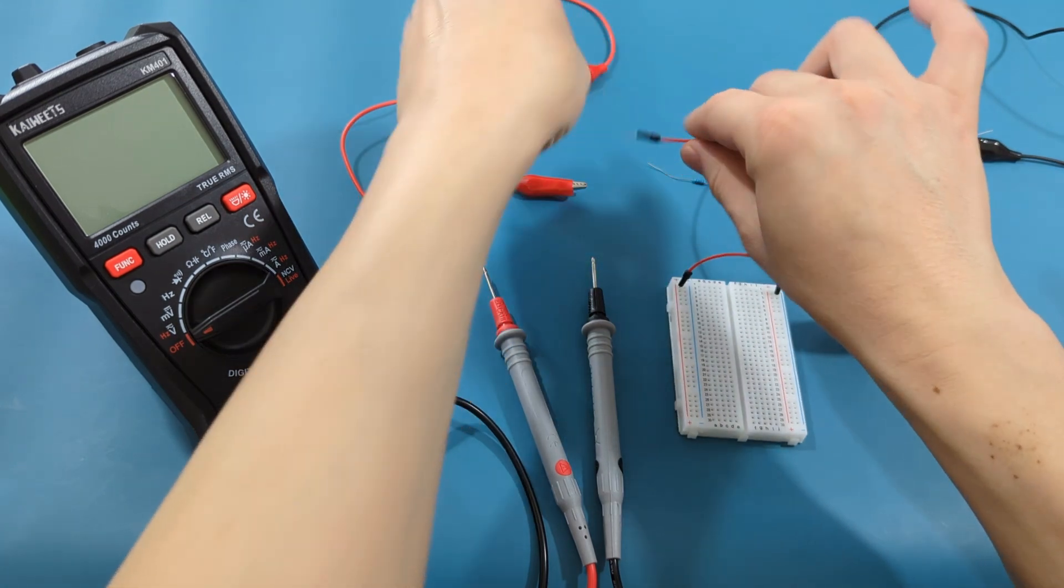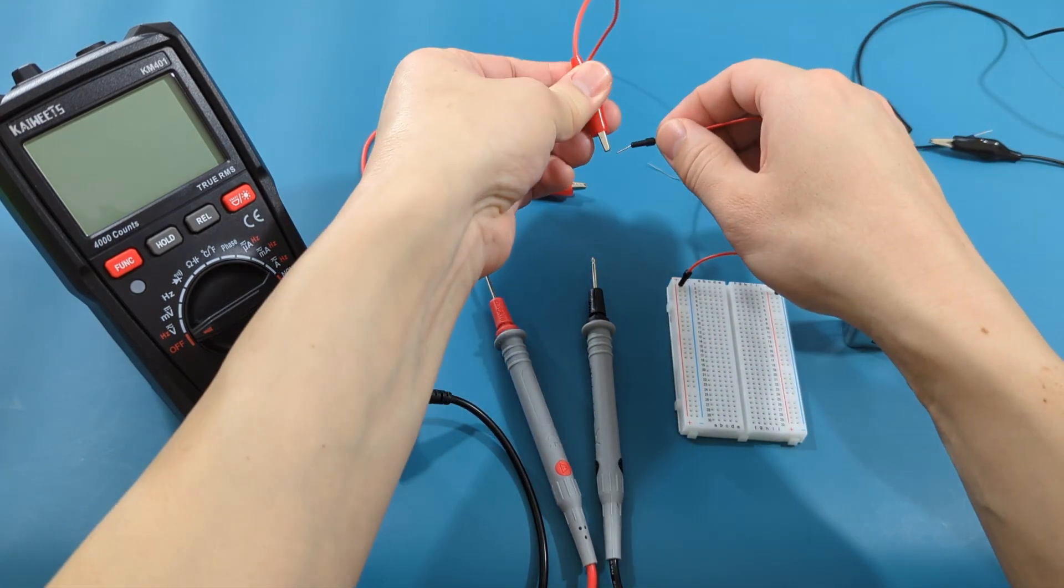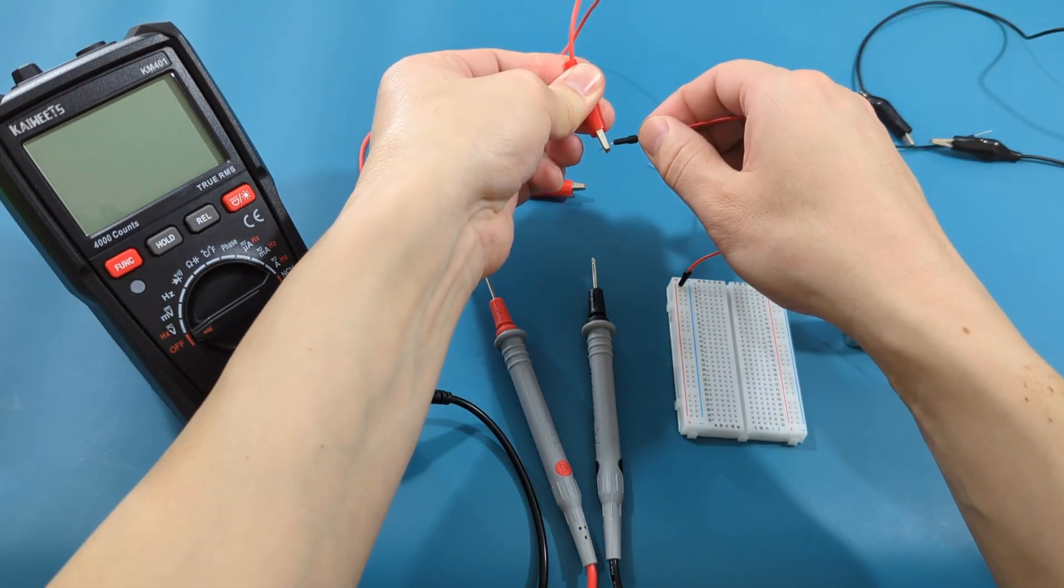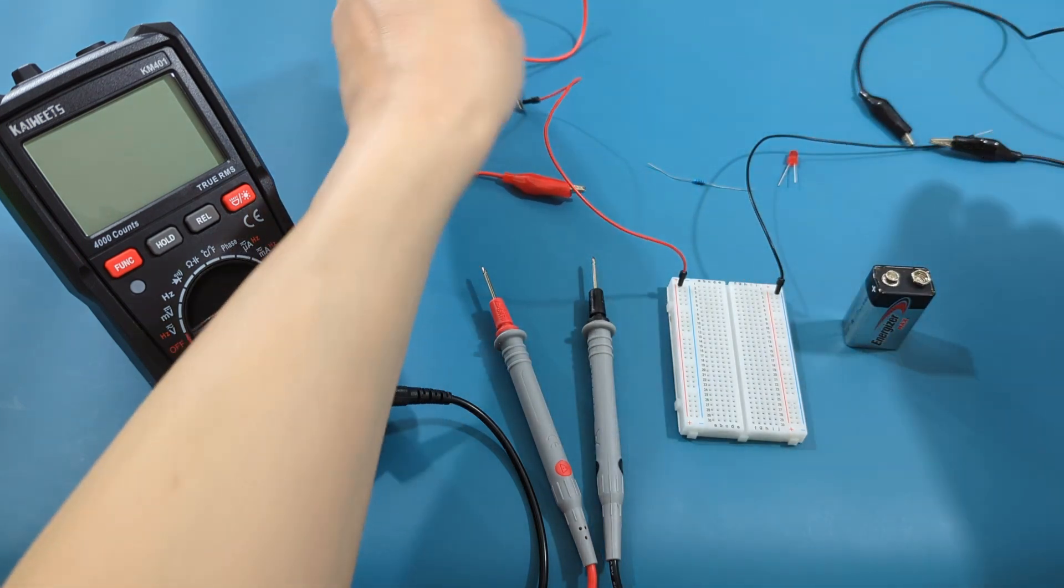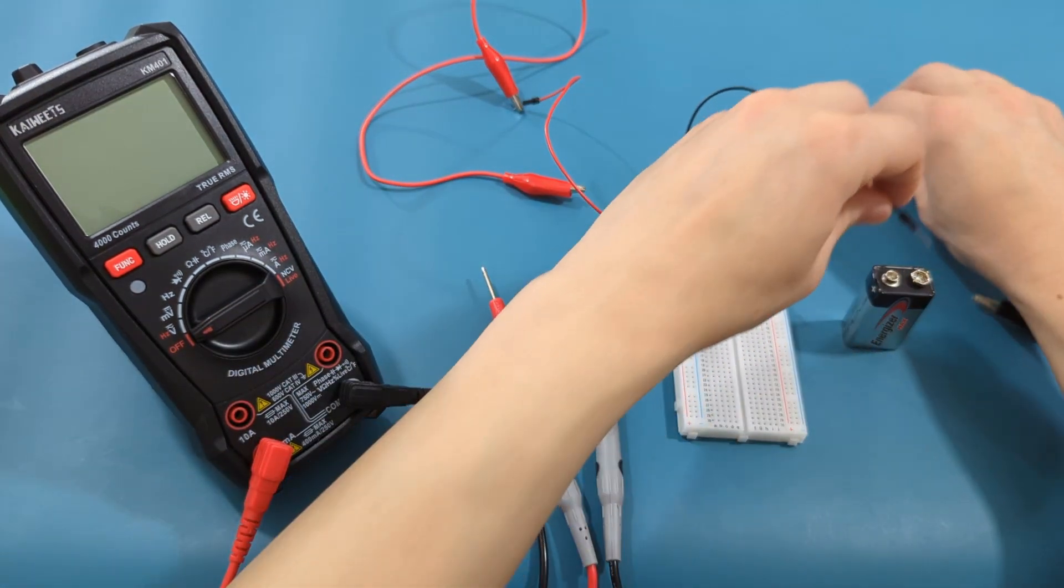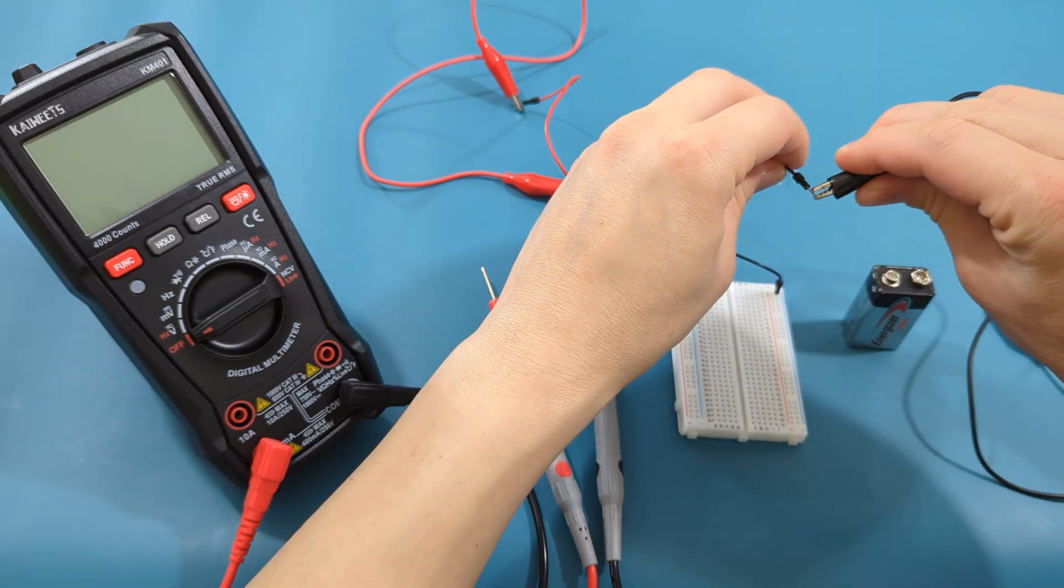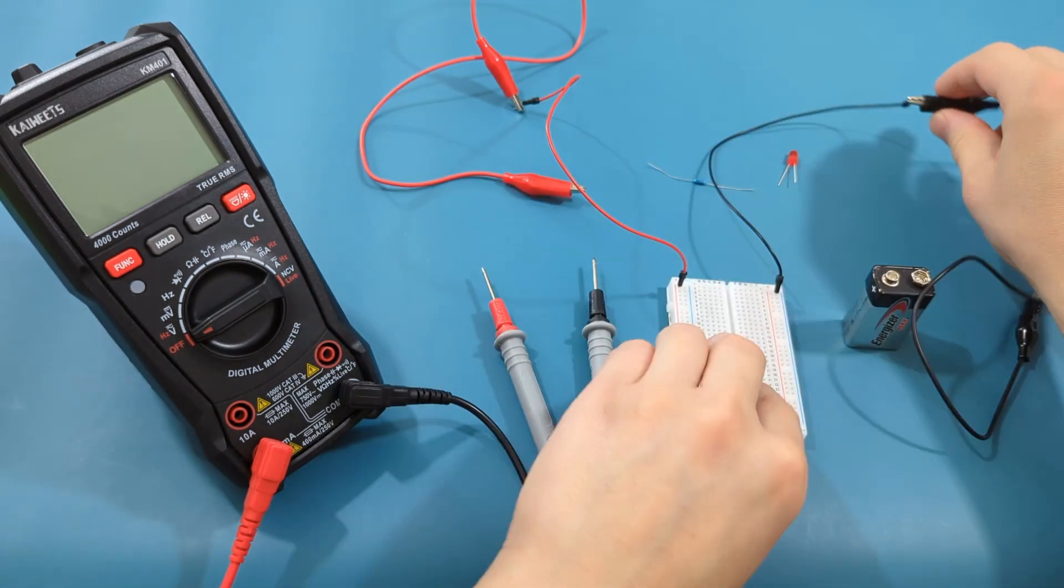Connect the other end of the red jumper wire to one end of the red alligator clip. Connect the other end of the black jumper wire to one end of the black alligator clip.